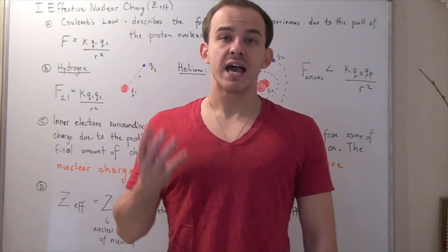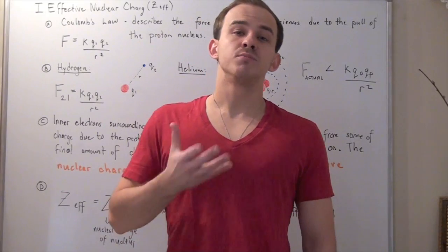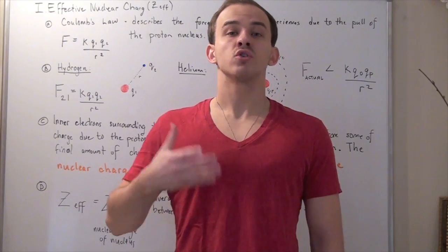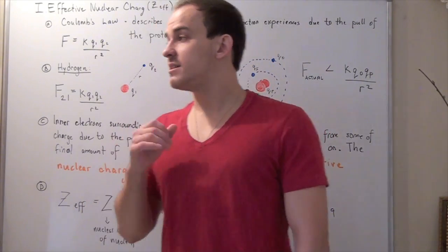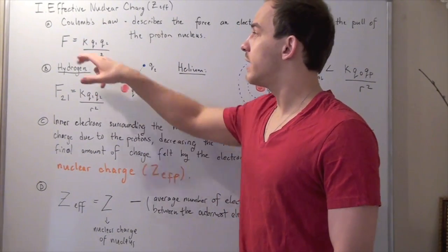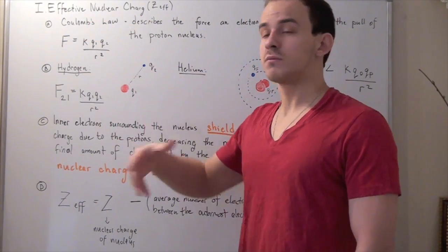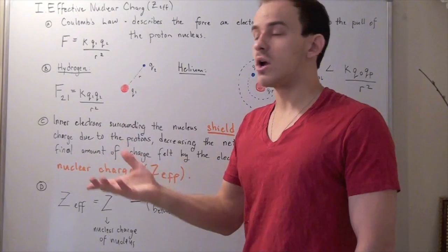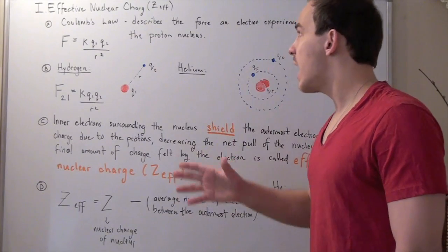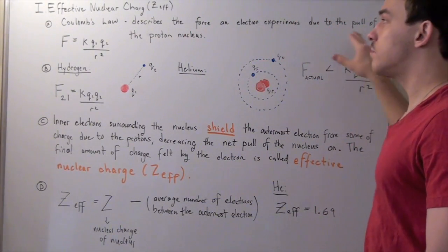Recall that what actually holds an atom together are the electrostatic forces felt by the electrons and the protons in the nucleus. This electrostatic force can be described by Coulomb's law, which states that the force on either the proton or the electron is given by k times q1, the charge of the proton, times q2, the charge of the electron, divided by the distance between them squared. Coulomb's law describes the force an electron experiences due to the pull of the proton nucleus.